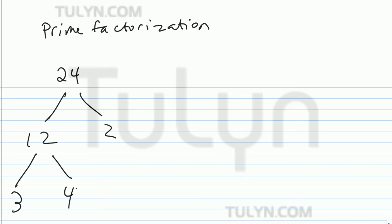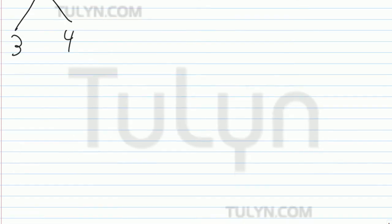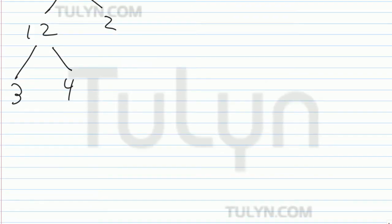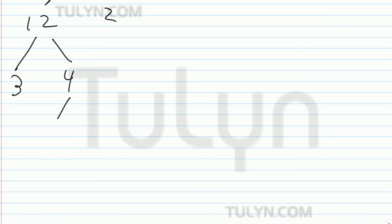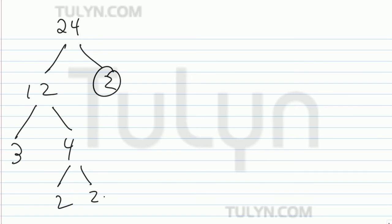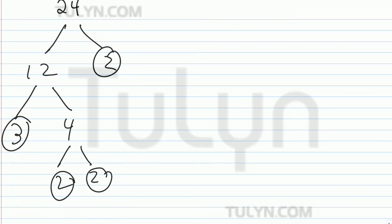There's 3 and 4. And then 4 can be broken down into 2 and 2. So circle all your last branches at 2, 2, 2, and 3. And so let's just write that out: 24 equals 3 times 2 times 2 times 2.